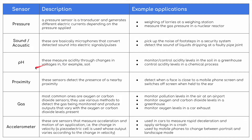We have pH sensors, which measure acidity through changes in voltage — for example in soil. They can be used to monitor and control acidity levels in the soil of a greenhouse, or control acidity levels in a chemical process.